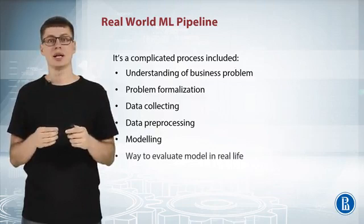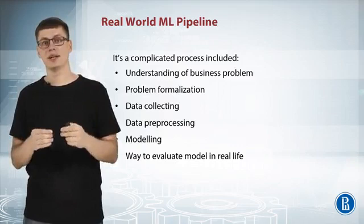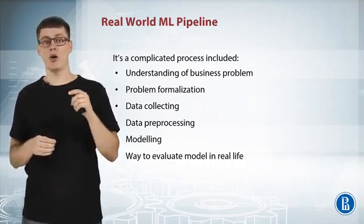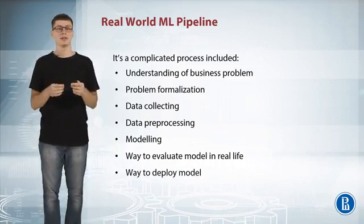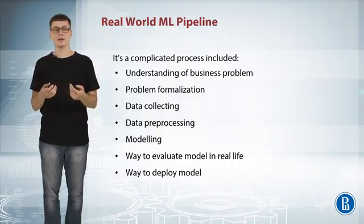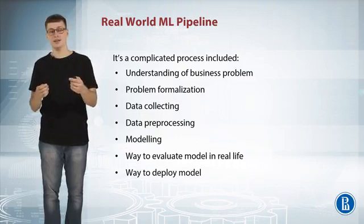The next steps are to check the effectiveness of the model in a real scenario, to make sure it works as expected and that no bias was introduced by the learning process. Does the model actually block spam? How often does it block non-spam emails? If everything is fine, the next step is to deploy the model — make it available to users. However, the process doesn't end here. You need to monitor the model performance, retrain it on new data, and periodically revise your understanding of the problem, going through the cycle again and again.